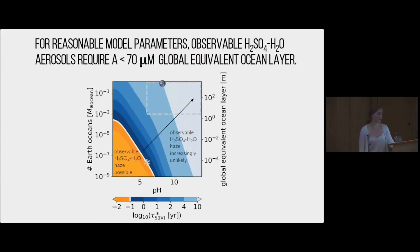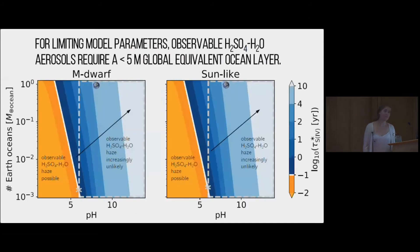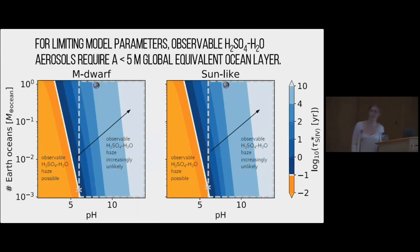Next we can look at sulfate hazes. For our realistic model parameters, to get an observable sulfate haze layer would require an ocean of less than 70 microns global equivalent layer. Again, this is really small, and at our 10⁻³ Earth ocean mass threshold, that whole regime is still blue. For the limiting parameters for sulfate aerosols, this is a bit less favorable because we're inconsistently setting every single parameter to be limiting at once, which wouldn't really be physically consistent. We still find that for our regime of interest, that's predominantly blue and still less than five meters global equivalent layer of water.